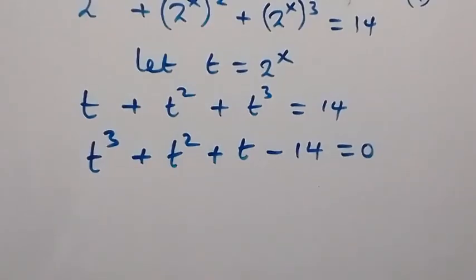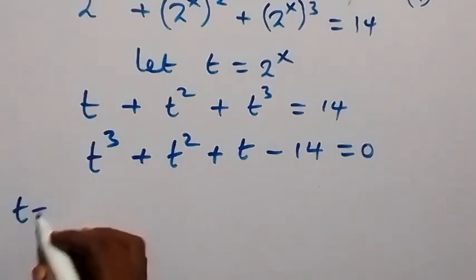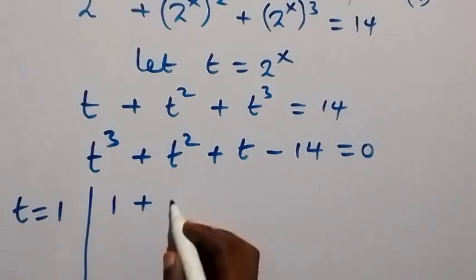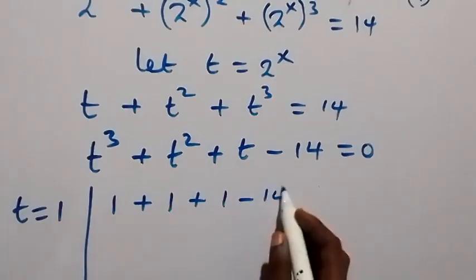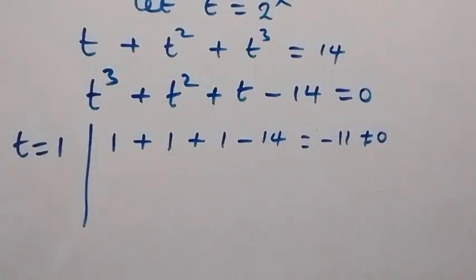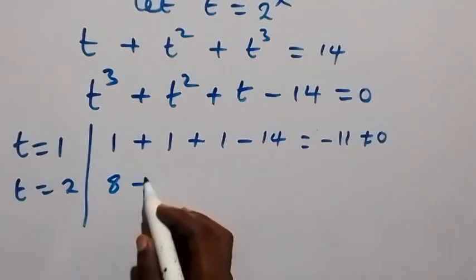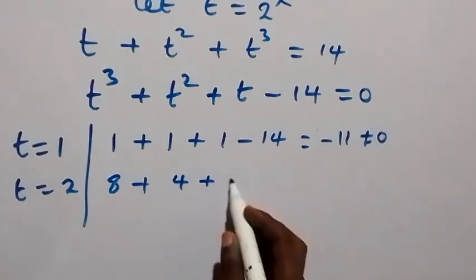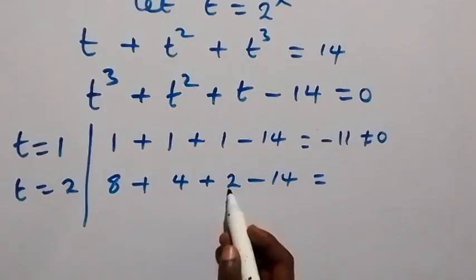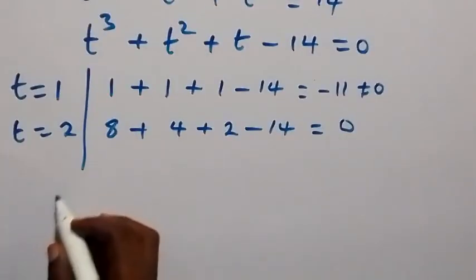From here we have a cubic equation. We can get one of the roots of this polynomial by testing factors of 14. When we put t equals to 1: 1 cubed is 1, plus 1 squared that's 1, plus 1, minus 14 — this equals minus 11, which is not equal to 0, so 1 is not a root. Now let's look at t equals 2: 2 cubed is 8, plus 2 squared that's 4, plus 2, minus 14 — this is 14 minus 14, which is 0. So 2 is a root, and therefore t minus 2 is a factor of this polynomial.